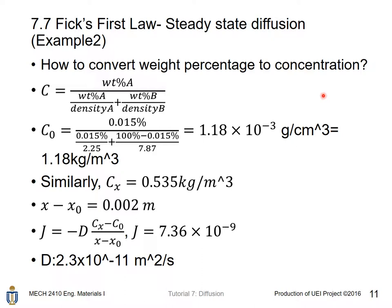C₀ is concentration of carbon at one point. It equals 0.015% over density of carbon. The density of carbon is 2.25 plus 100 minus 0.015 percentage. As there are only two species within this steel, one is carbon and another is iron. Therefore, the weight percentage for iron will be 100% minus 0.015 over 7.87.